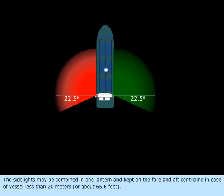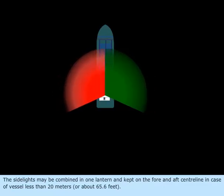The side lights may be combined in one lantern and kept on the fore and aft centerline in case of vessels less than 20 meters or about 65.6 feet.